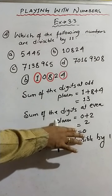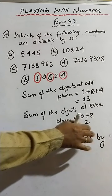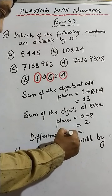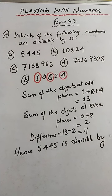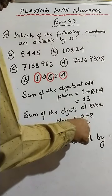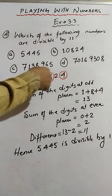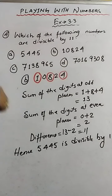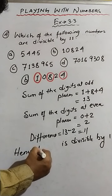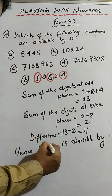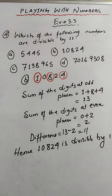Now we find the difference: 13 minus 2, that would be 11. Since the difference is 11, this number is also divisible by 11. Hence, 10824 is divisible by 11 because the difference is coming 11.